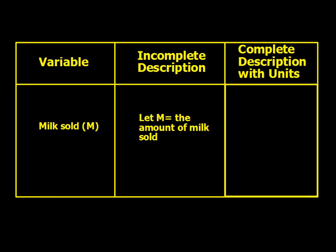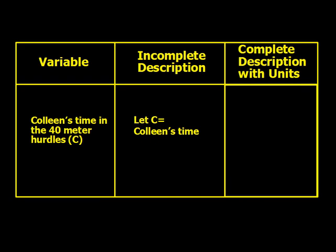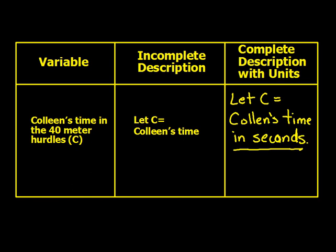For the milk sold variable M, instead of 'let M equal the amount of milk sold,' we write: let M equal the amount of milk sold in gallons. On to our next one — Colleen's time in the 40-meter hurdles, let C equal Colleen's time. Let C equal Colleen's time in seconds. Seconds is the best choice since it's only 40 meters.